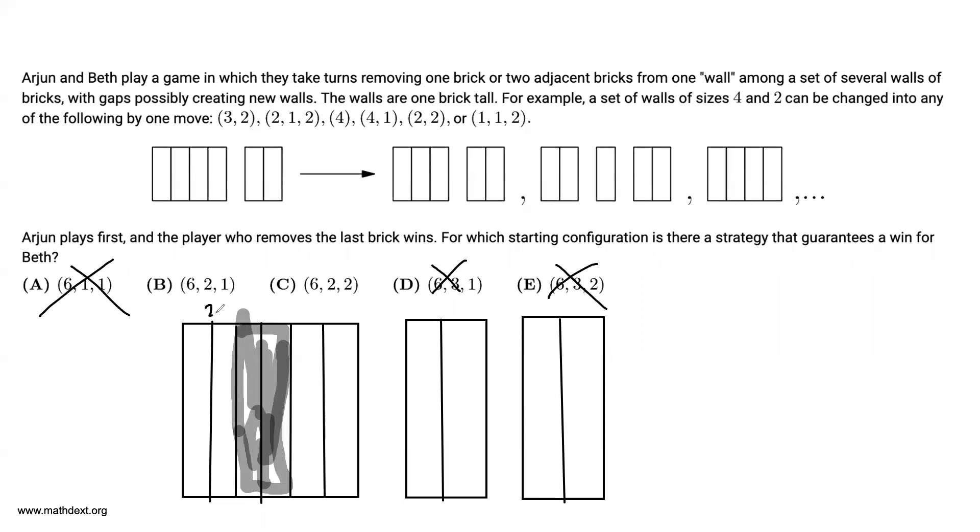And once again, you can see that this is symmetric. So whatever Beth does, Arjun copycats him. So we can rule out answer choice C, and we have that the only one for which Arjun does not have a copycat strategy is answer choice B.